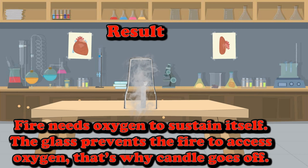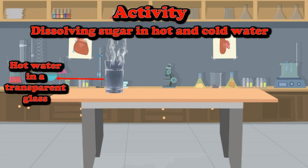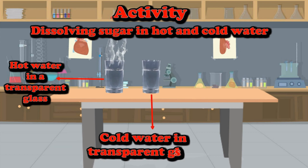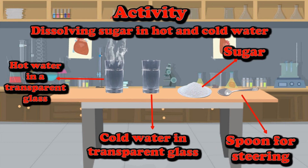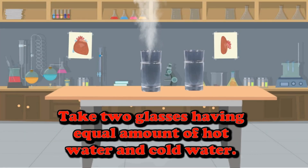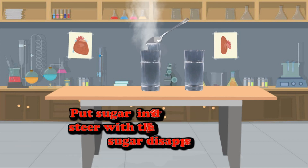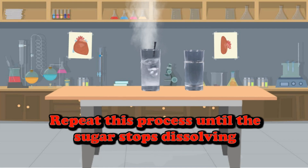Activity: dissolving sugar in hot and cold water. Material required: hot water in a transparent glass, cold water in a transparent glass, sugar, and a spoon for stirring. Let's start our activity. Take two glasses having equal amounts of hot and cold water. Put sugar into the hot water and stir with the spoon until the sugar disappears.